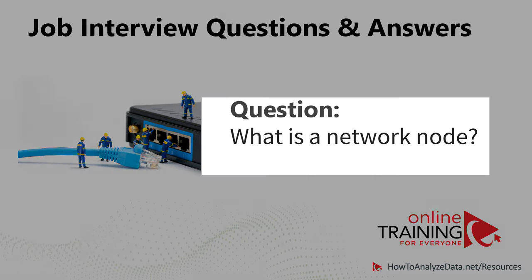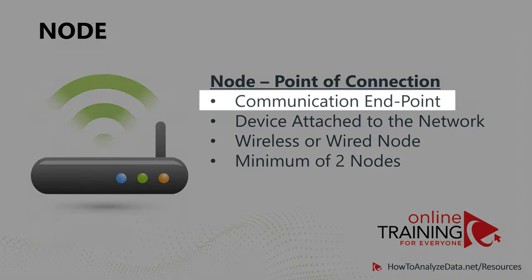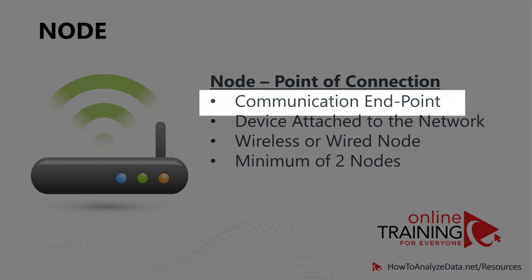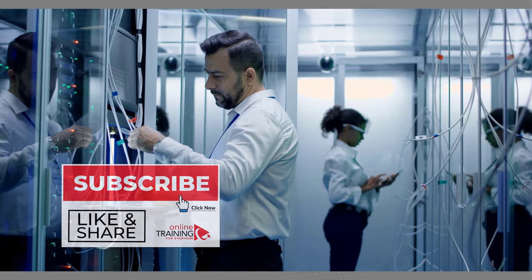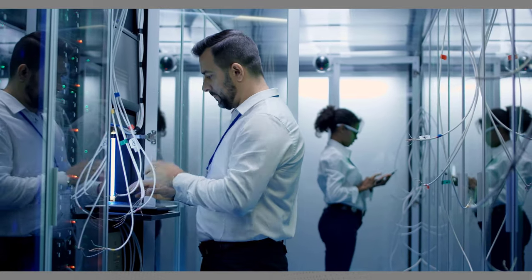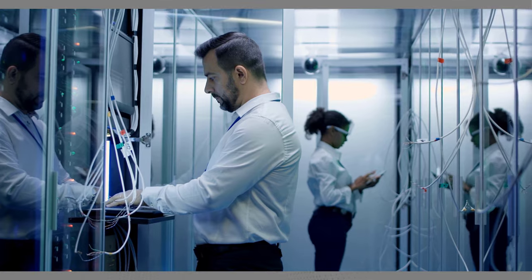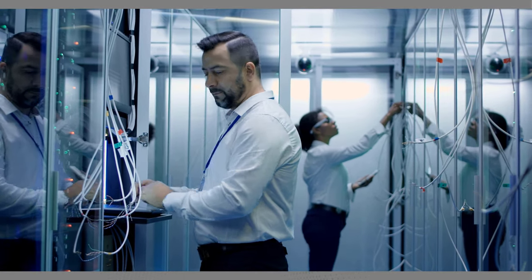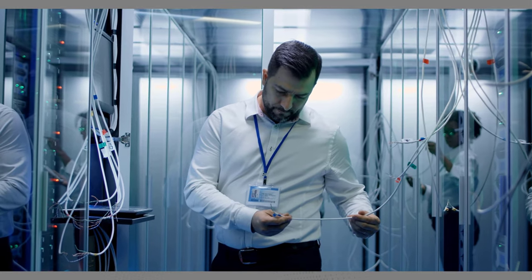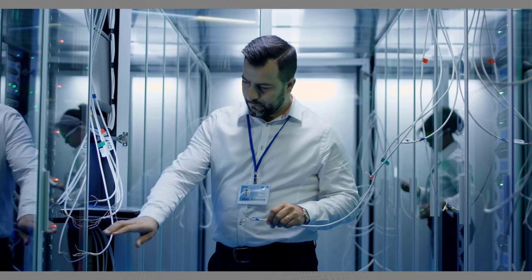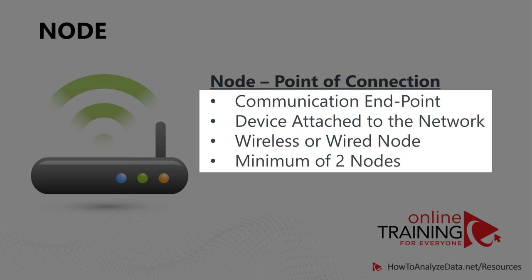Very frequently you might be asked, what is network node? A node typically refers to the networking endpoint where a connection takes place. A physical network node is typically an electronic device attached to the network which is capable of creating, receiving, or transmitting information over a communication channel. Devices could be connected to the network over wired or wireless nodes. As a very important point, two or more nodes are needed to form a network connection.